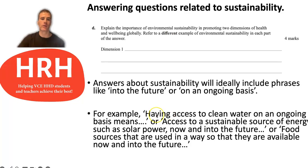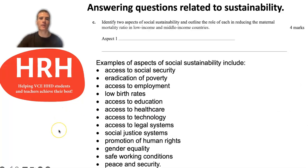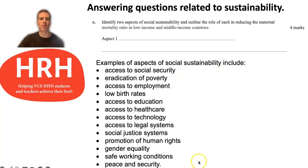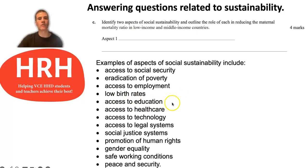For a question like this, you would link your example into a dimension of health and wellbeing and reference it for groups of people worldwide or globally to address that aspect of the question. There was another question from a past paper that asked you to identify two aspects of social sustainability and outline the role of each in reducing maternal mortality ratio in low and middle income countries — four marks, so two marks for each aspect and your link into reducing the maternal mortality ratio. From the exam report for that year, they gave some different examples of social sustainability. You'd be practising in your notes how to reference these in a way that demonstrates they're sustainable — such as access to ongoing education or access to healthcare on an ongoing basis. Practise putting that into action when answering questions like this.